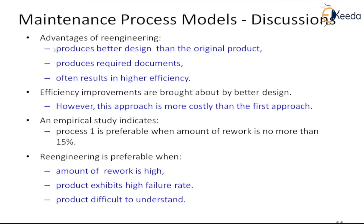Advantages of re-engineering include: it produces a better design than the original product, produces required documents, and often results in higher efficiency because the system has been simplified and restructured. However, this approach is more costly than process model one, where we went directly to the code. Here we must complete many steps and use analyzer and restructuring tools.